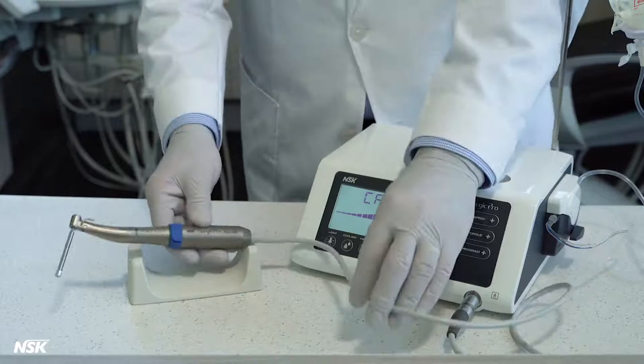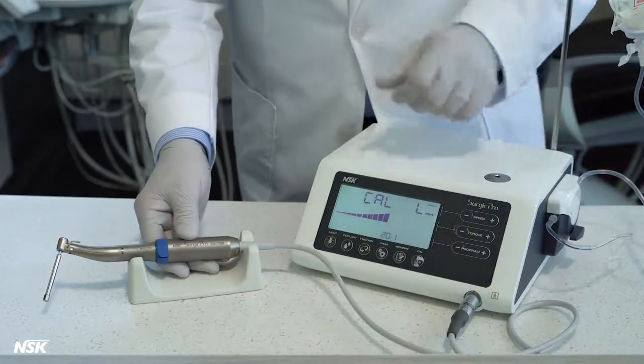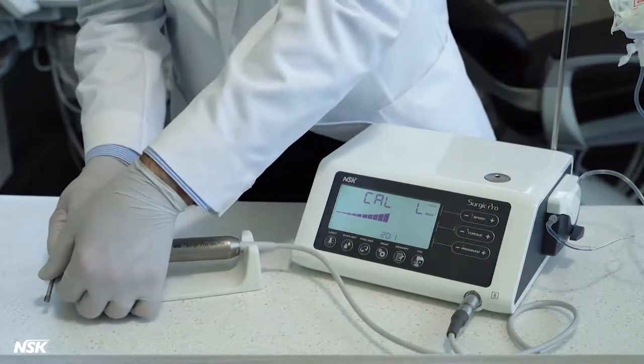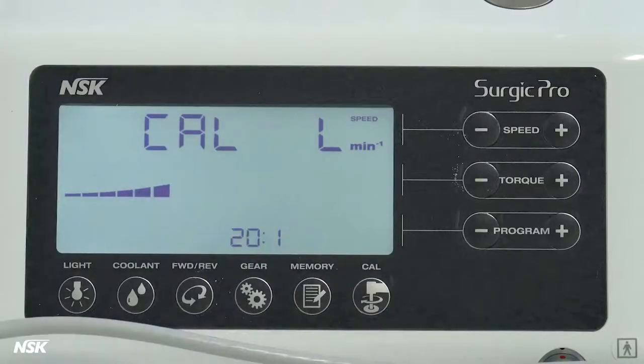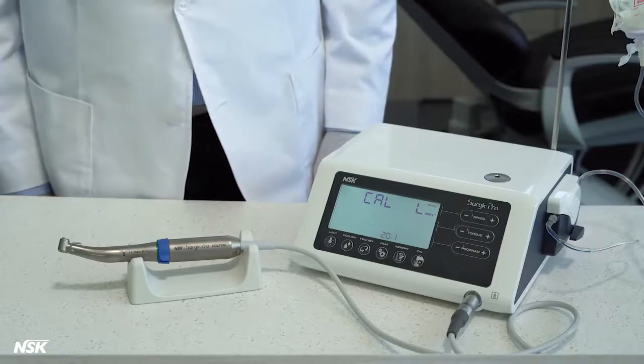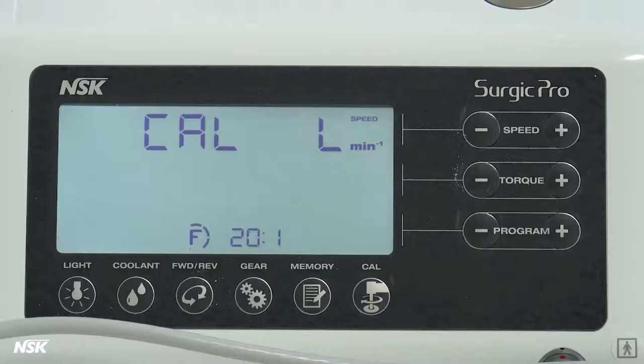Step three, speed calibration. Remove the drill and leave the motor and the attachment on the handpiece stand. Press the cal key. The attachment will start working and rotate for eight seconds at slow speed and another eight seconds at fast speed. When it's done, you will hear a beep and the calibration process is complete.